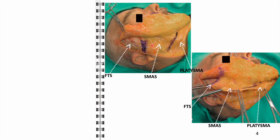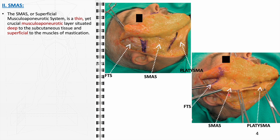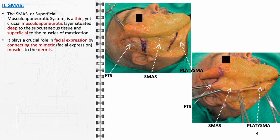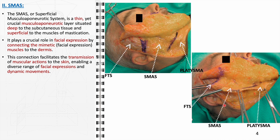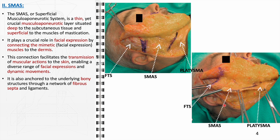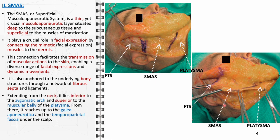The superficial musculo-aponeurotic system is a thin yet crucial musculo-aponeurotic layer situated deep to the subcutaneous tissue and superficial to the muscles of mastication. It plays a vital role in facial expression by connecting the mimetic facial expression muscles to the dermis, facilitating the transmission of muscular actions to the skin and enabling a diverse range of facial expressions. It is anchored to the underlying bony structures through a network of fibrous septa and ligaments.